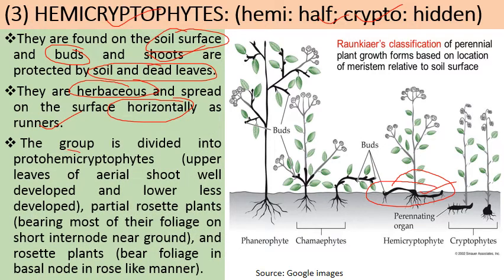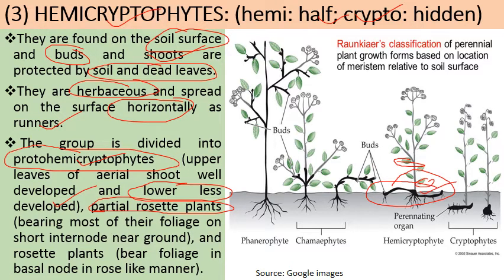Hemicryptophytes are divided into three sub-groups. First are Proto-hemicryptophytes, where upper aerial leaves are well developed and lower leaves are less developed. Second are Partial Rosette Plants, which bear most of their foliage on the short internode near the ground surface — rosette plants being those in which the stem is highly reduced, with leaves concentrated near the ground at that internode. Third are Rosette Plants, where the stem is highly reduced to a disk-like form, with all leaves arranged on this reduced stem near the basal node in a rose-like manner.